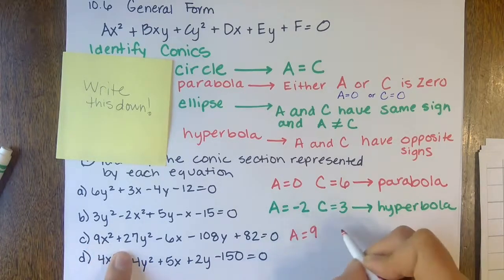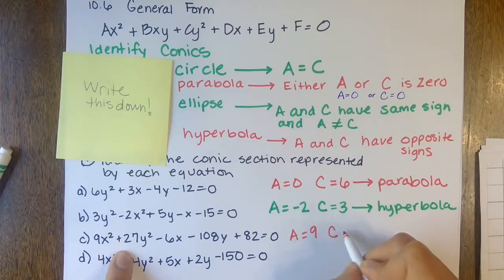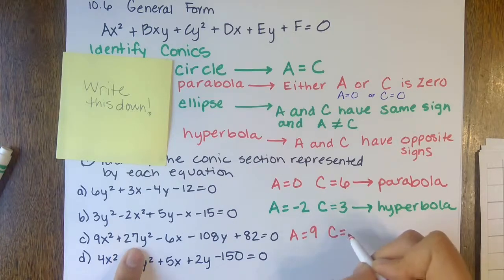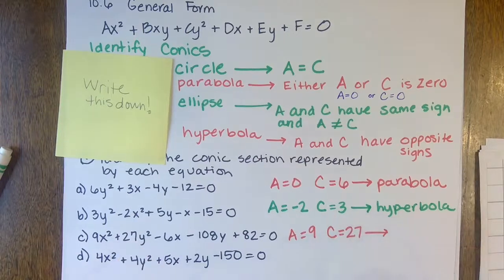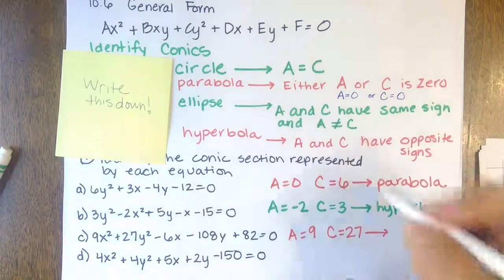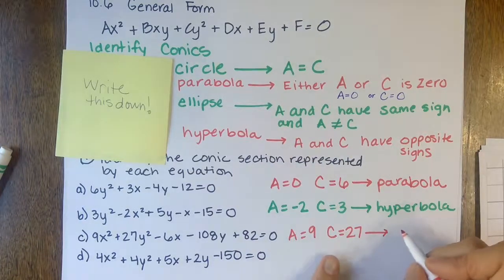Problem C: the x² term gives A equals nine, and the y² term gives C equals 27. Both have the same sign, so that is an ellipse.